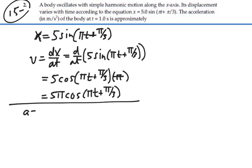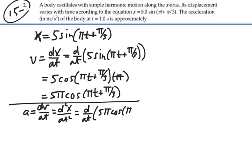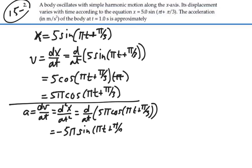We want the acceleration, which is the derivative of the velocity with respect to time — or in other words, the second derivative of the position with respect to time. That will be the derivative of 5 pi cosine of (pi t plus pi over 3). That's going to be equal to — derivative of the cosine is negative sine — so this is negative 5 pi sine of (pi t plus pi over 3). And again, by the chain rule, we take the derivative of what's inside the function, which gives us another pi. So this is equal to negative 5 pi squared sine of (pi t plus pi over 3).